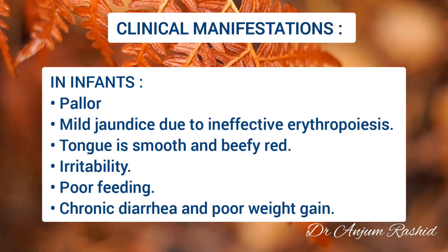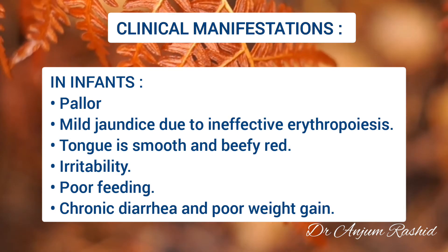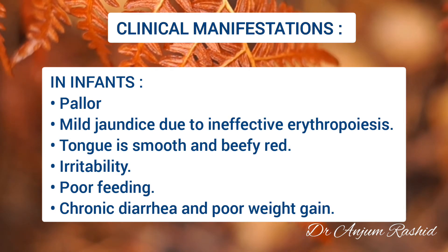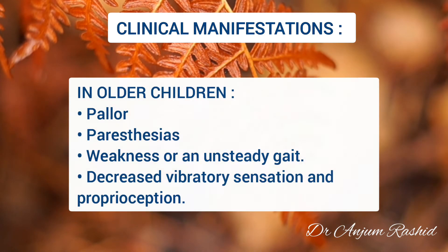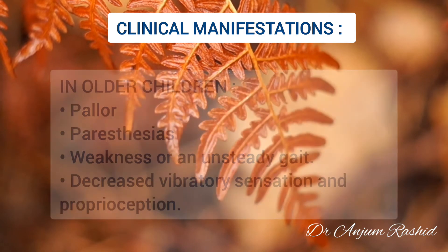Regarding clinical manifestations, in infants there is usually pallor and mild jaundice due to ineffective erythropoiesis. The tongue is usually smooth and beefy red. There is irritability, poor feeding, chronic diarrhea, and poor weight gain. In older children, symptoms include pallor, paresthesia, weakness, unsteady gait, and decreased vibratory sensation and proprioception.